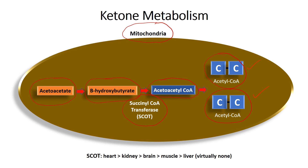SCOT is the important enzyme in ketone metabolism. It turns out the tissue with the highest concentration of SCOT is the heart, followed by the kidney, the brain, and muscle — all of which have plenty. The liver, on the other hand, has virtually no SCOT and does not have the ability to use ketones. That's actually a good thing, because the liver can produce all the glucose it needs for its own energy through gluconeogenesis — it's even producing glucose from fat using the glycerol molecule. Other tissues don't have that capacity, so they need the ketones and have higher concentrations of SCOT to use them for energy.